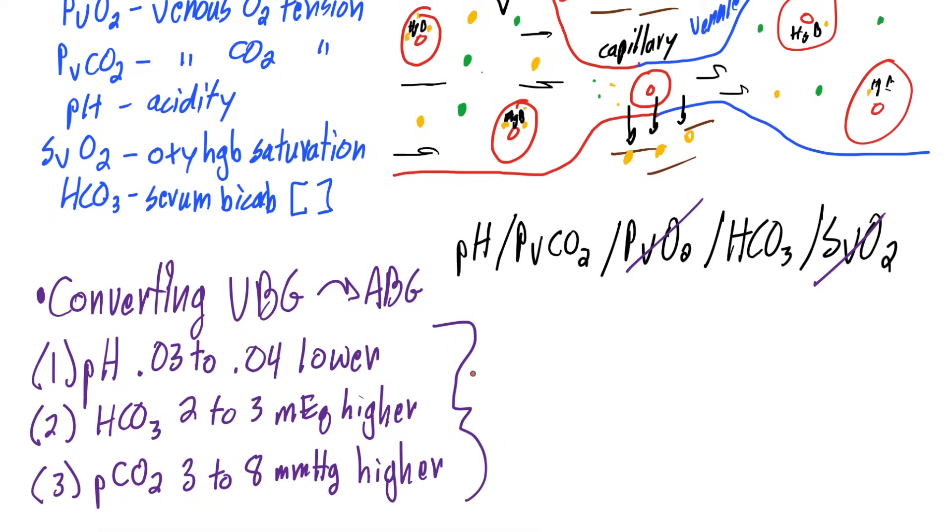These are the big differences. With that being said, studies have shown there's significant variability. Some patients it'll line up perfectly, others it won't. Because of that, we have to be careful. If your clinical picture does not fit the venous blood gas you're seeing, get an ABG to verify they're either similar or not. Verify the similarity. If they're similar, then you can go by venous blood gases. If they're very different, you can't act on that venous blood gas.